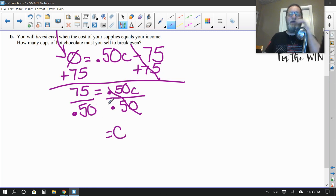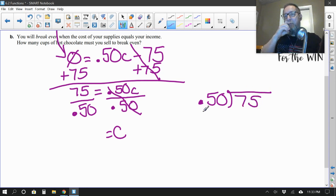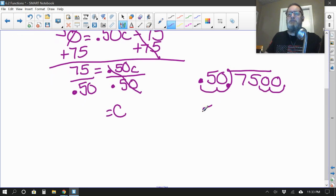That cancels these out. 50 cents divided by 50 cents cancels out. And C is equal to whatever this equals. Okay. So let's see. $75 divided by 50 cents. How many 50 cents go into, sets of 50 cents go into 75? Let's set that up over here. So 50 cents, I'm dividing that into 75. All right. Well, one thing we don't have is we don't want to have a decimal in our divisor. So I'm going to move that over two places. Basically, I multiplied it by 100. Well, I also have to do the same thing to my dividend. So I moved that over two places. So really, here's the problem we're going to solve. All right.